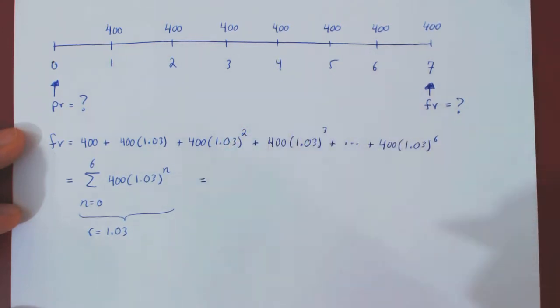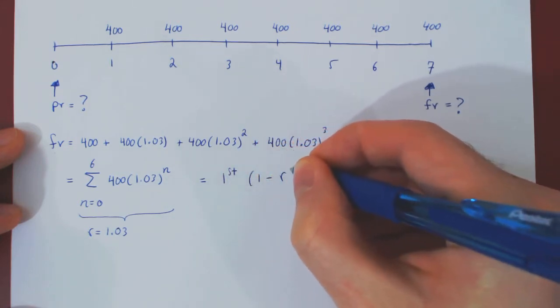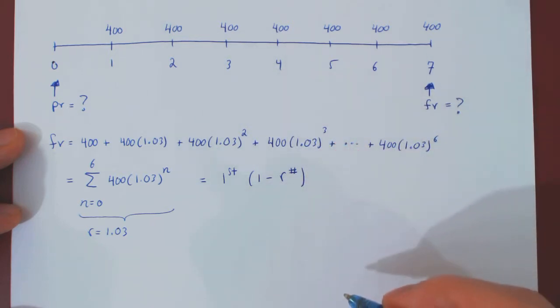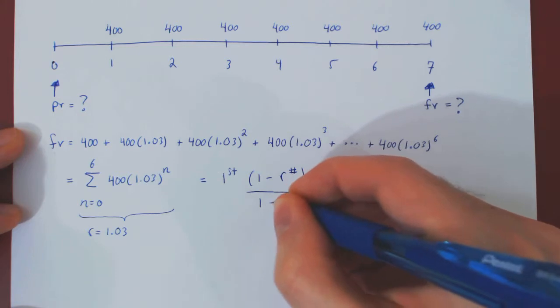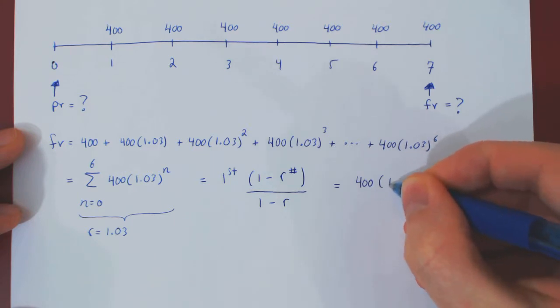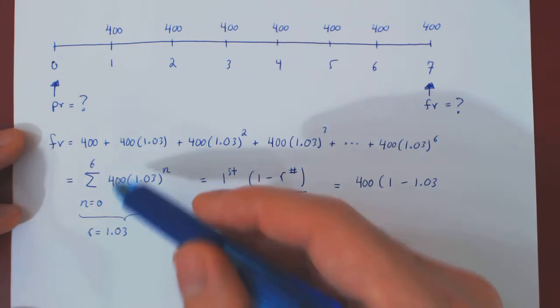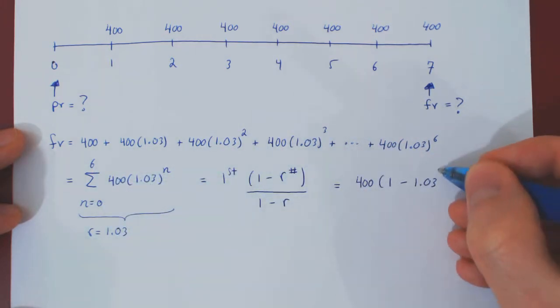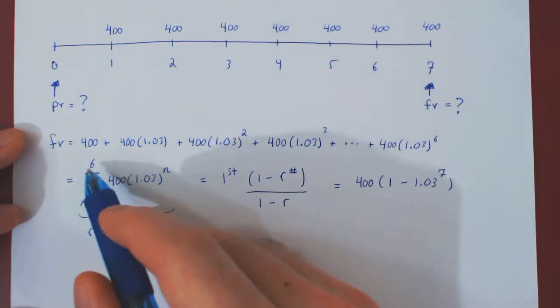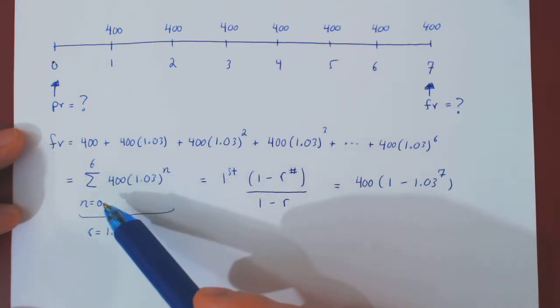And if you recall the formula for a finite geometric series, it goes like this. It is the first term times one minus r to the number of terms summed in the summation over simply one minus r. Well, the first term is when n is zero, which is simply 400. Times one minus r, r is 1.03. To the number of terms being summed. And here be careful, it is not six. It is six minus zero plus one, therefore seven.